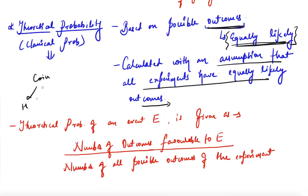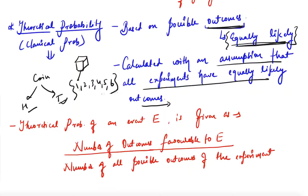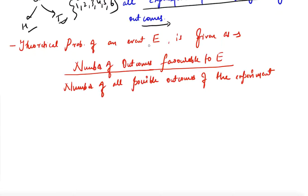For example, when tossing a coin, the possible outcomes are head and tail and we assume it is a fair coin so both are equally likely. When throwing a die, we can get 1, 2, 3, 4, 5, or 6, and the chance of getting any number is equally likely. Theoretical probability = number of outcomes favorable to event E divided by number of all possible outcomes.